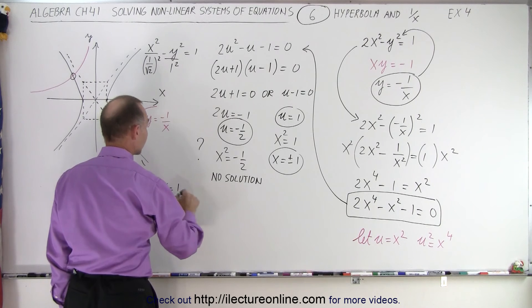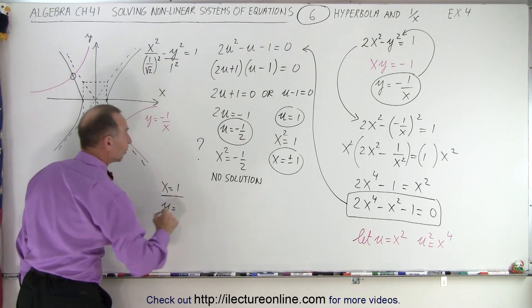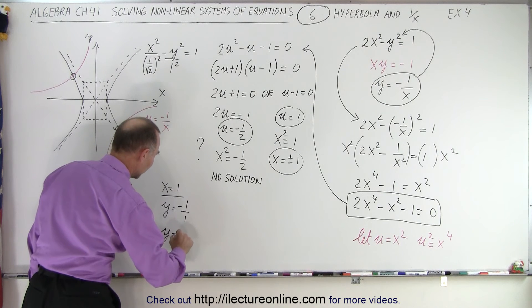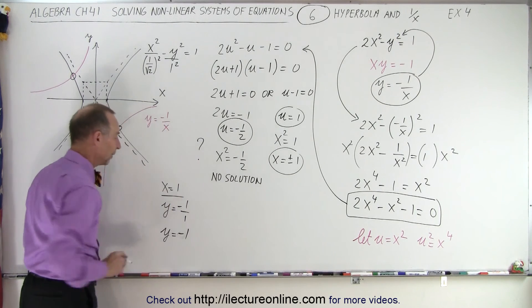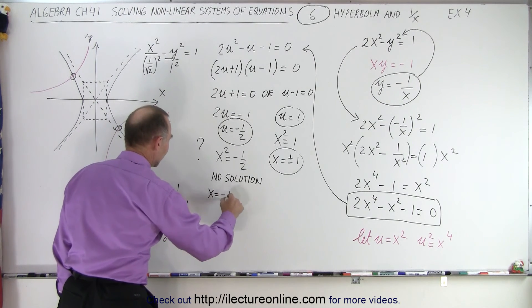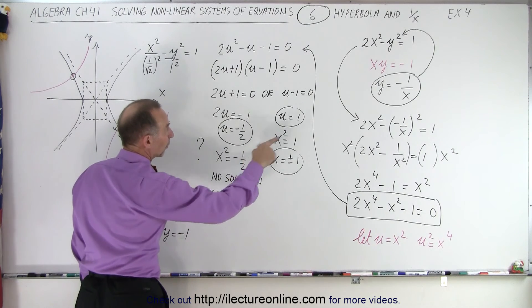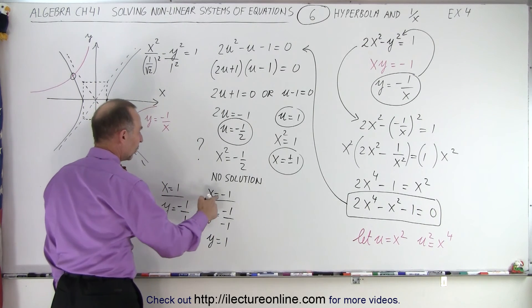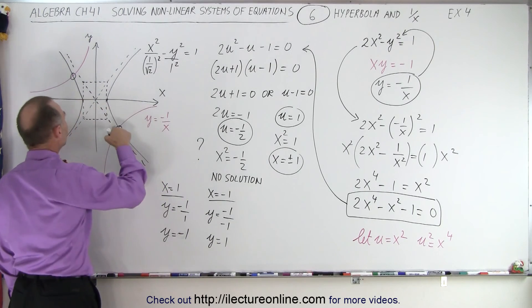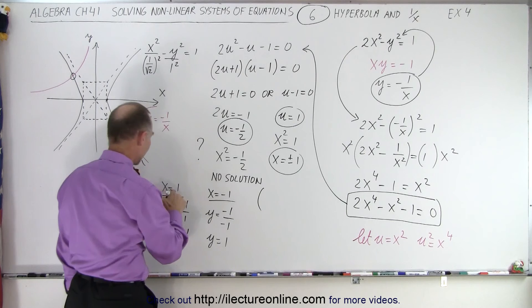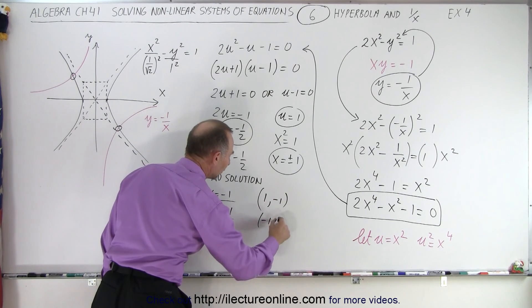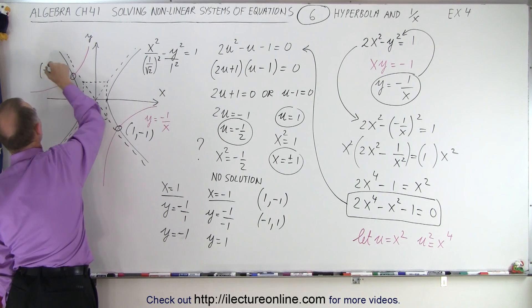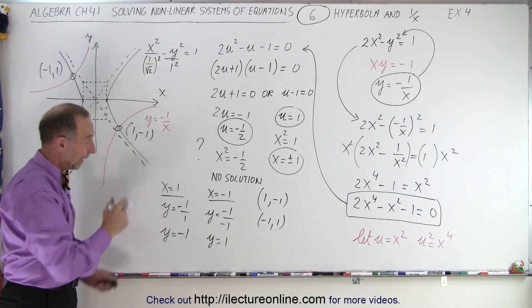If x is equal to 1, then y is equal to minus 1 over 1, because x equals 1, so y equals negative 1. And if x is equal to negative 1, then y equals negative 1 over x, which is negative 1, so y equals 1. So when x equals 1, y equals negative 1. When x equals negative 1, y equals 1 — which are the two points we find here. So the two solutions are: x equals 1, y equals negative 1; or x equals negative 1, y equals 1. This is 1 negative 1, and this point right here is negative 1, 1. And that is how you find the solution in this particular case.